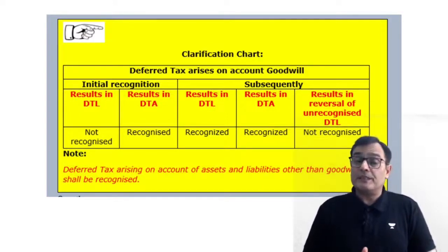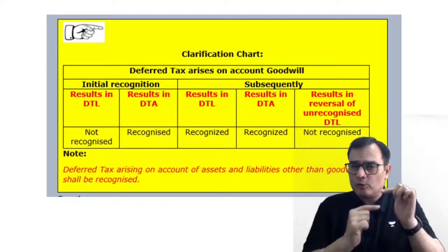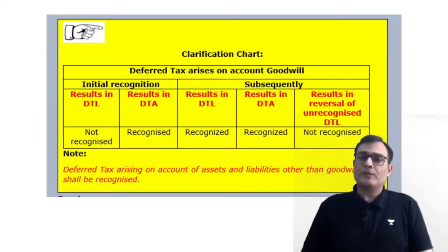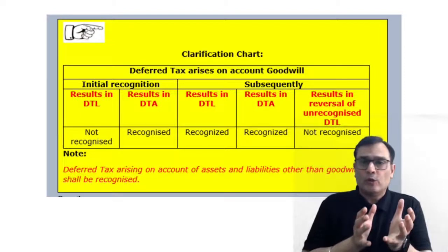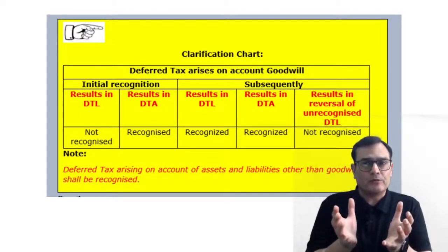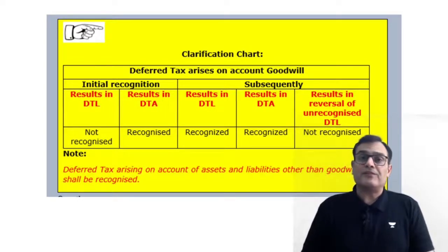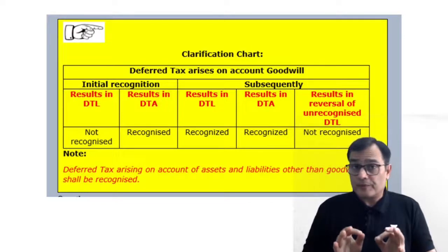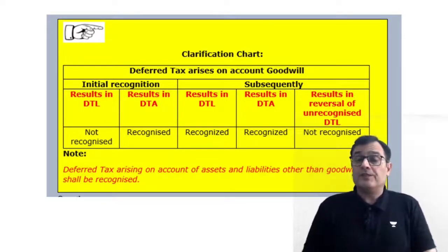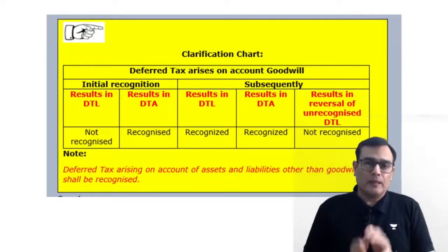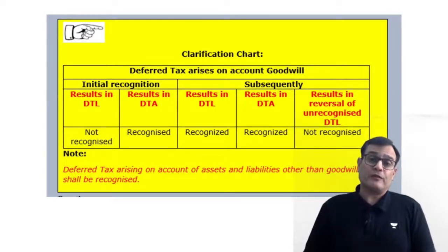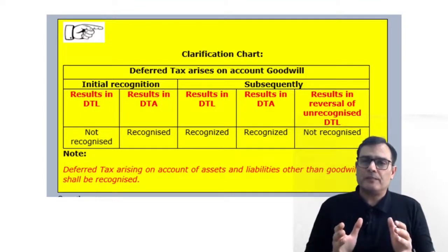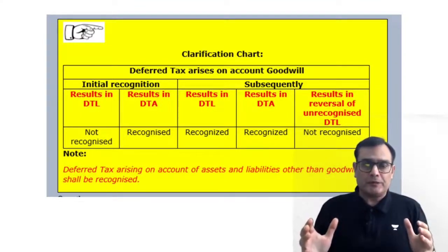The focus is: when you do the acquisition entry, you get goodwill as a balancing figure. Now when you get the goodwill as a balancing figure, there could be either a DTL arising on account of goodwill or a DTA arising on account of goodwill. The standard says that if there is a DTA arising on account of goodwill it is recognized — there is no prohibition. But if there is a DTL arising on account of goodwill, the standard says don't create it, and there is a specific reason why.